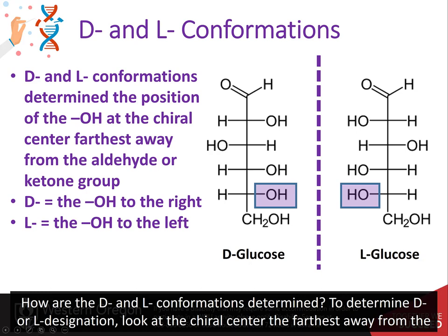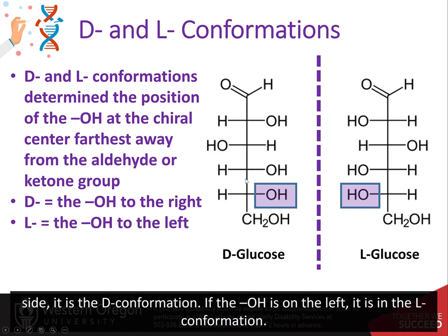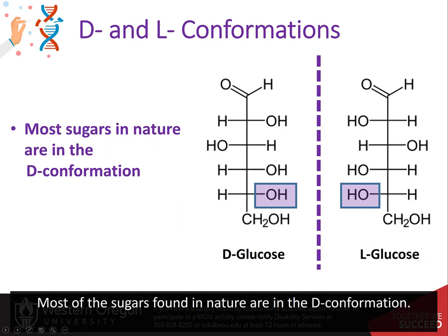To determine the D or L designation, look at the chiral center farthest away from the major functional group — the aldehyde or the ketone. For glucose, this is carbon 5. If the OH is on the right side, it is the D configuration. If the OH is on the left side, it is the L configuration. Most of the sugars found in nature are in the D configuration.